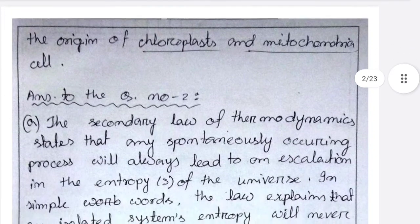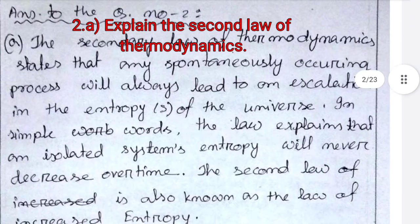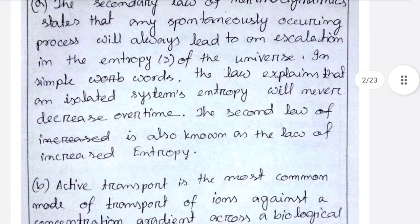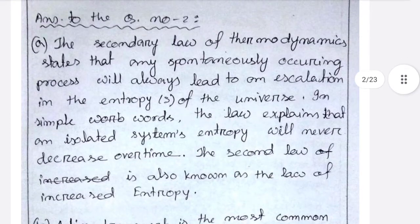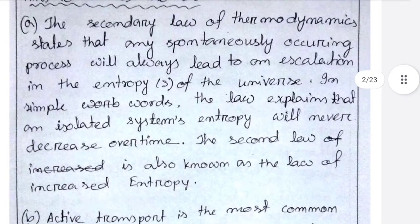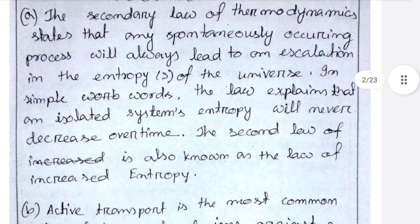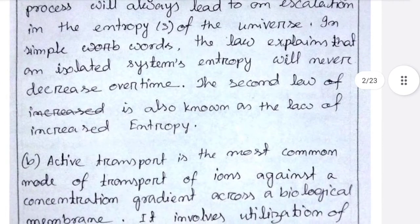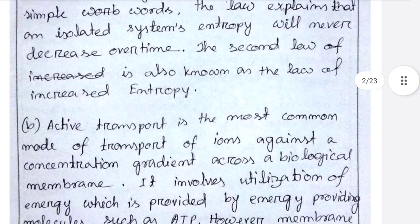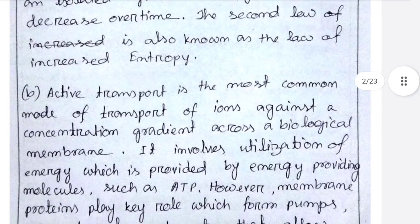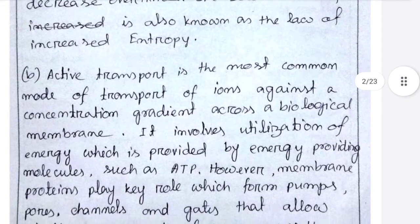The next question: explain the second law of thermodynamics. The second law of thermodynamics states that any spontaneously occurring process will always lead to an escalation in the entropy of the universe. In simple words, the law explains that in an isolated system, entropy will never decrease over time. The second law is also known as the law of increased entropy.